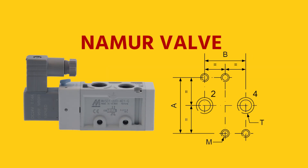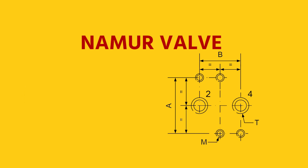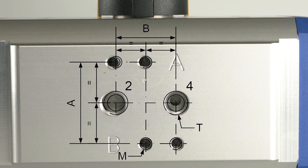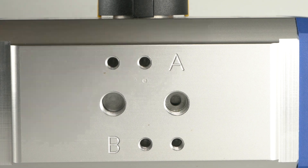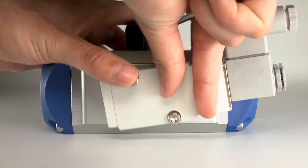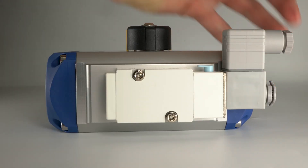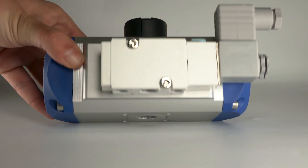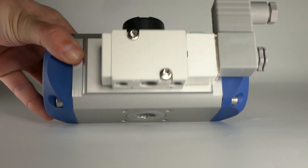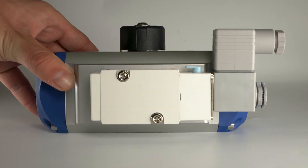NAMUR valves are a special type that have a standardized design to directly mount them to a valve actuator. They are easy to mount, compact, and reduce the number of hoses and fittings.